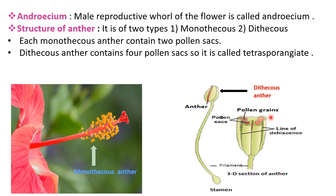In the given diagram, a line of dehiscence is shown. The line of dehiscence causes the breaking of the anther after the maturity of pollen grains, and pollen grains are released into the atmosphere by breaking the anther through this line. After release, pollen grains are transported to different flowers by pollinating agents. The process of transfer of pollen grains from the anther to the stigma of the flower is called pollination.